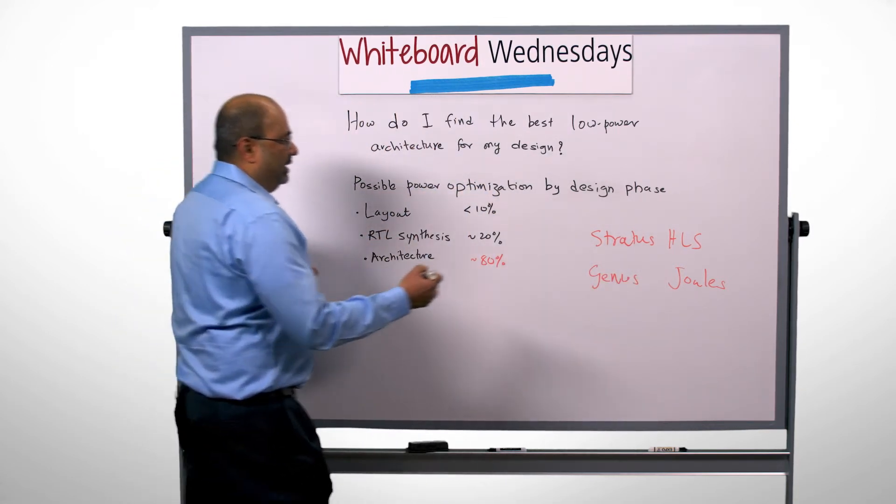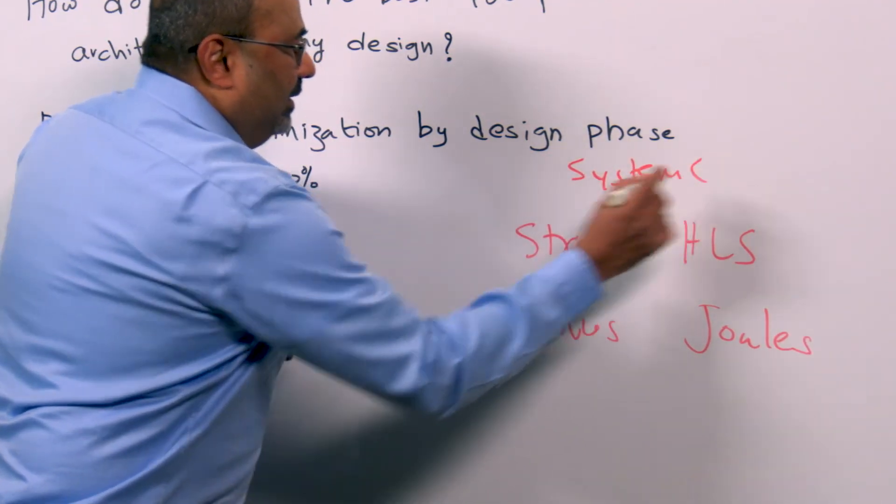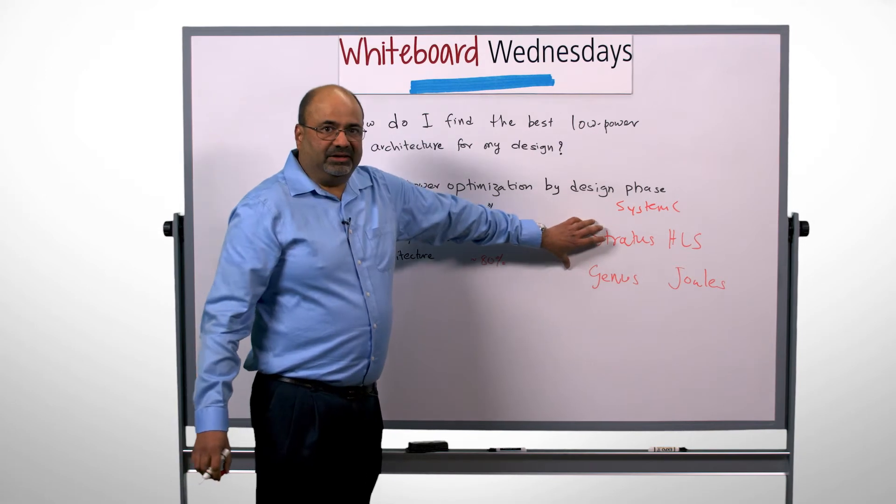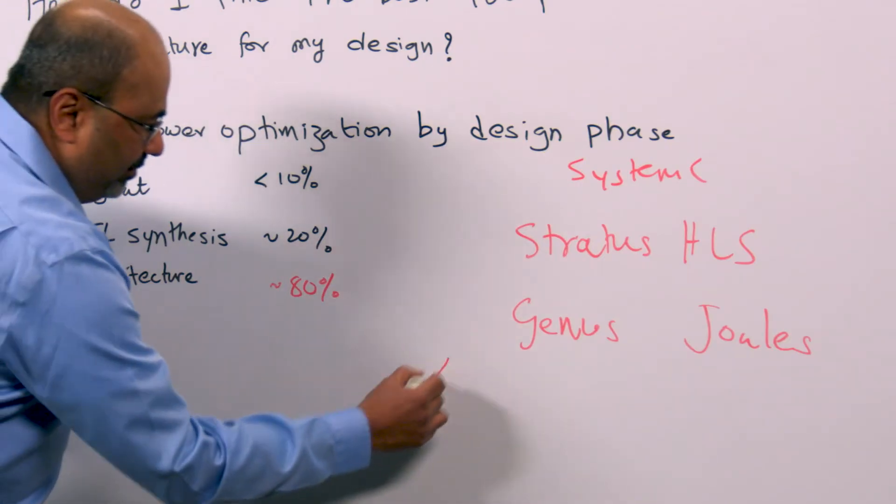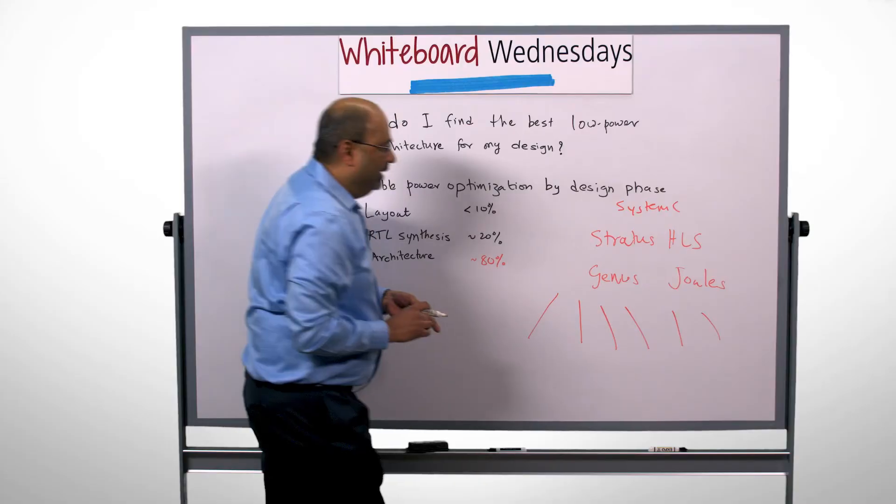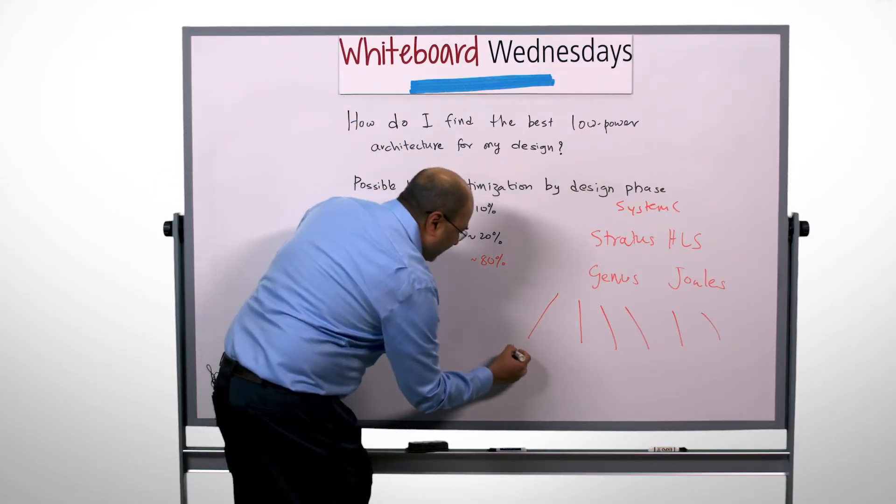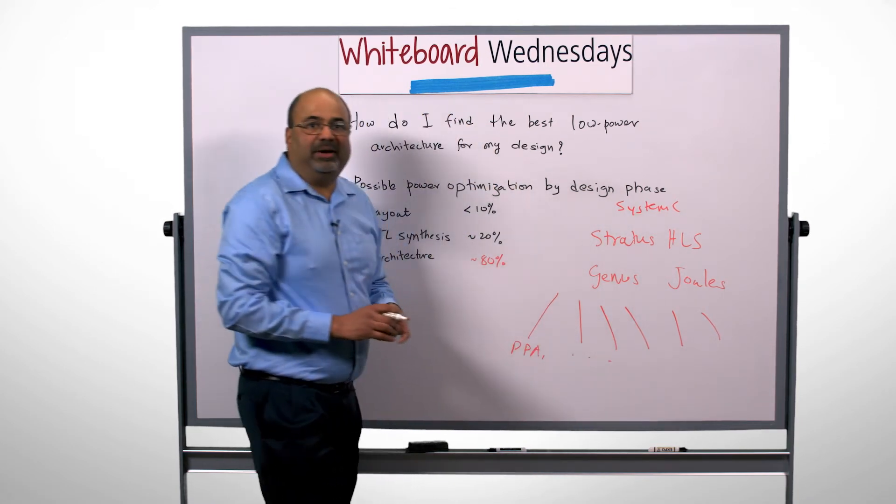The way this flow works is you take your SystemC design and use the Stratus HLS environment along with the Genus and Joules integrations to create multiple different architectures for your design and then measure the power, performance, and area of each one and find the best solution.